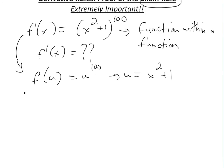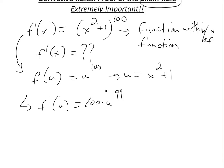We know the derivatives: f prime of u is equal to 100 times u^99 using the power rule — you can look at my other video. And the derivative of u in terms of x is equal to 2x. This is the power rule again, plus the addition rule, and the derivative of the constant 1 is 0.